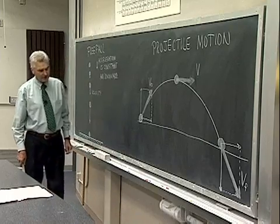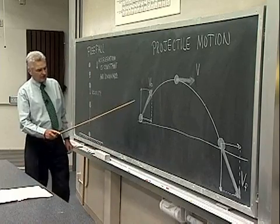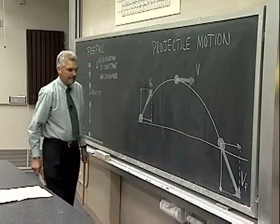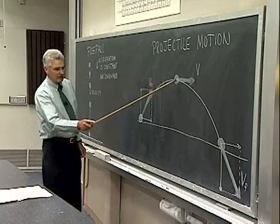Near the surface of the earth, we see that the vertical velocity is constantly changing. In fact, the vertical velocity is zero right at the top of the path.